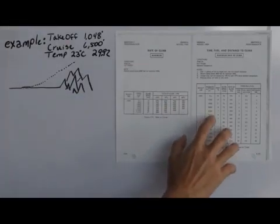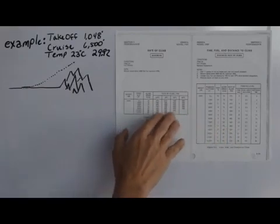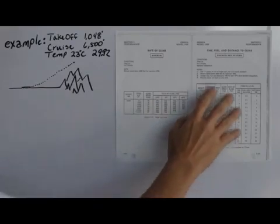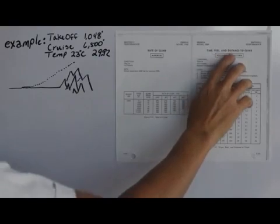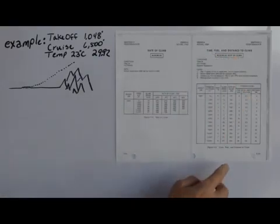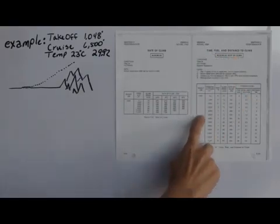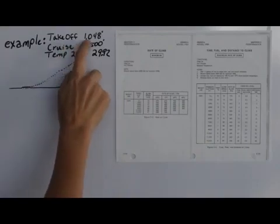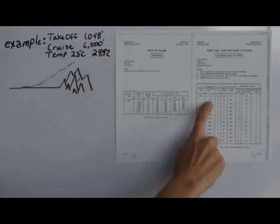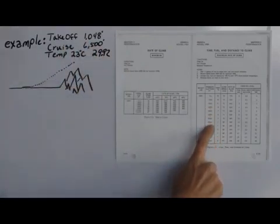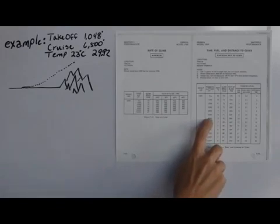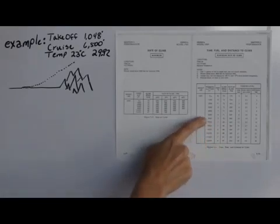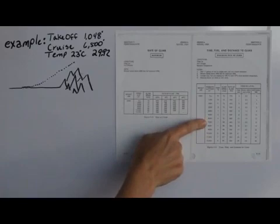The next thing is, now that we understand about what rate of climb feet per minute we would obtain, we'll look and see how much time, fuel, and distance we would use. They again only give us one weight under this particular performance chart, and then it has our pressure altitude. In our scenario, we are going to take off from a field elevation of roughly 1,000 feet and we intend to cruise at 6,500 feet, so we have to go halfway between the 6,000 and 7,000.